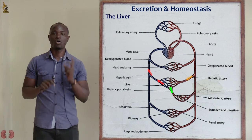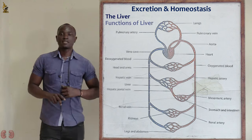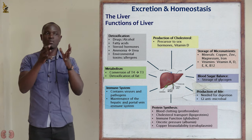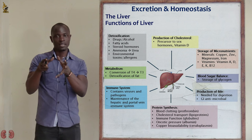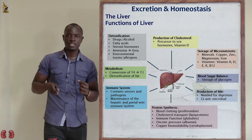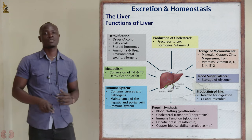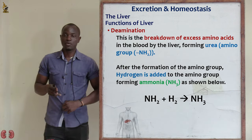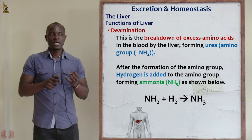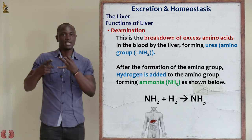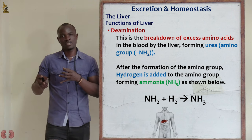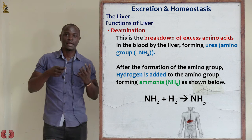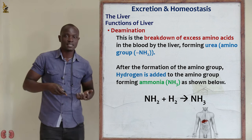Let's now look at the functions of the liver. Why must blood from the stomach and intestine pass through the liver before entering the general circulatory system? The first function of the liver is deamination. Anytime you hear deamination, picture amino acids and proteins. Deamination is the breakdown of excess amino acids in the liver.